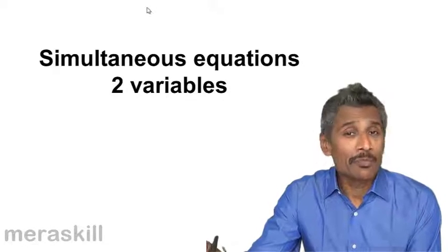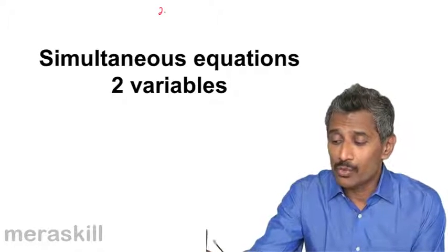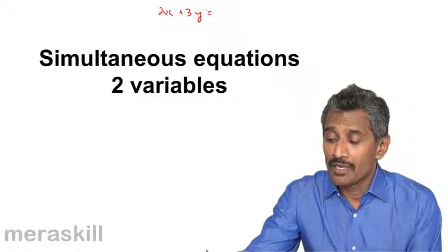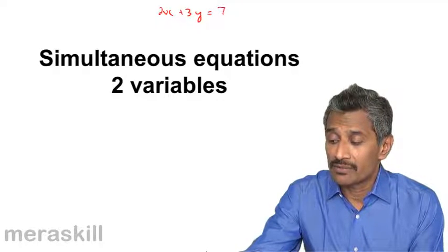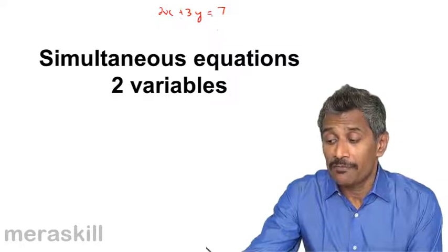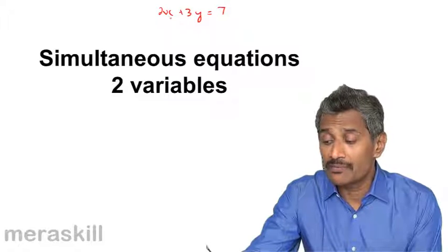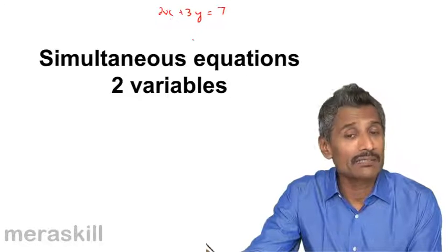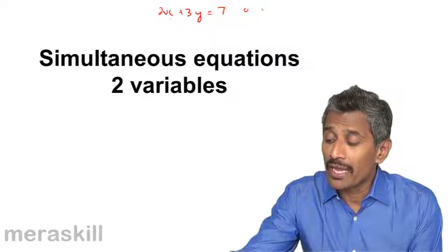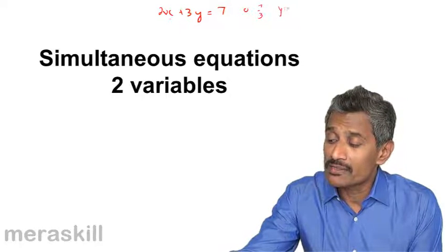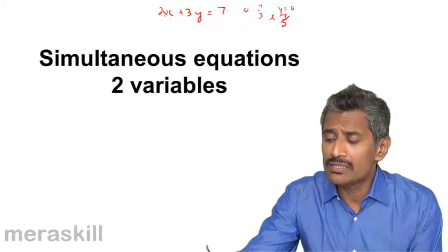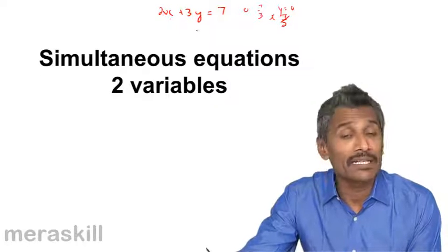So for example if you have an equation like this, say you have 2x plus 3y is 7. Now if you look at this equation you want to find out the various values of x and y which will satisfy this equation. If you put an arbitrary value you could take x as 0 and y will be 7 by 3, or y is 0 and x would be 7 by 2. There are numerous such values which will satisfy this equation.